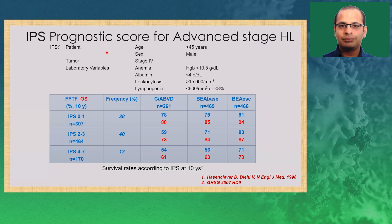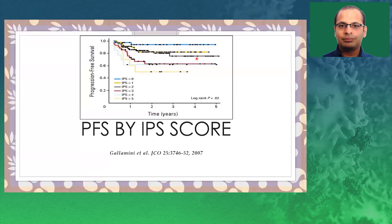For advanced stage, we have the Hasenclever index or the International Prognostic Score (IPS). It comprises parameters including age more than 45, male sex, tumor stage 4, hemoglobin less than 10.5, albumin less than 4, leukocytosis more than 15,000, and lymphopenia less than 600 or 800. Whatever chemotherapy regime is used — ABVD, BEACOP, or escalated BEACOP — overall survival and freedom from treatment failure decrease as the IPS score increases. With IPS 0, PFS is almost 95%, decreasing to approximately 50% as IPS score increases to 5 or more.